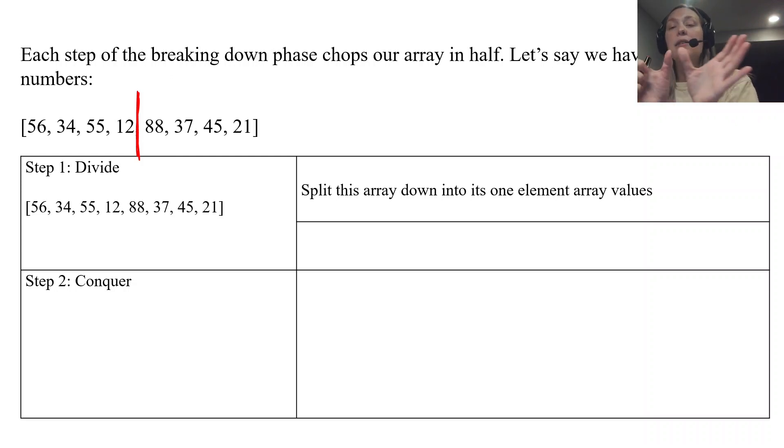There's eight elements here, so it's pretty easy to divide in half. If you had an odd number of elements it would just do similar to the binary search. After it splits down the middle it will split these into two separate arrays, and then it'll split that in half so that you have four separate arrays, and then the algorithm will split each of those in half again.